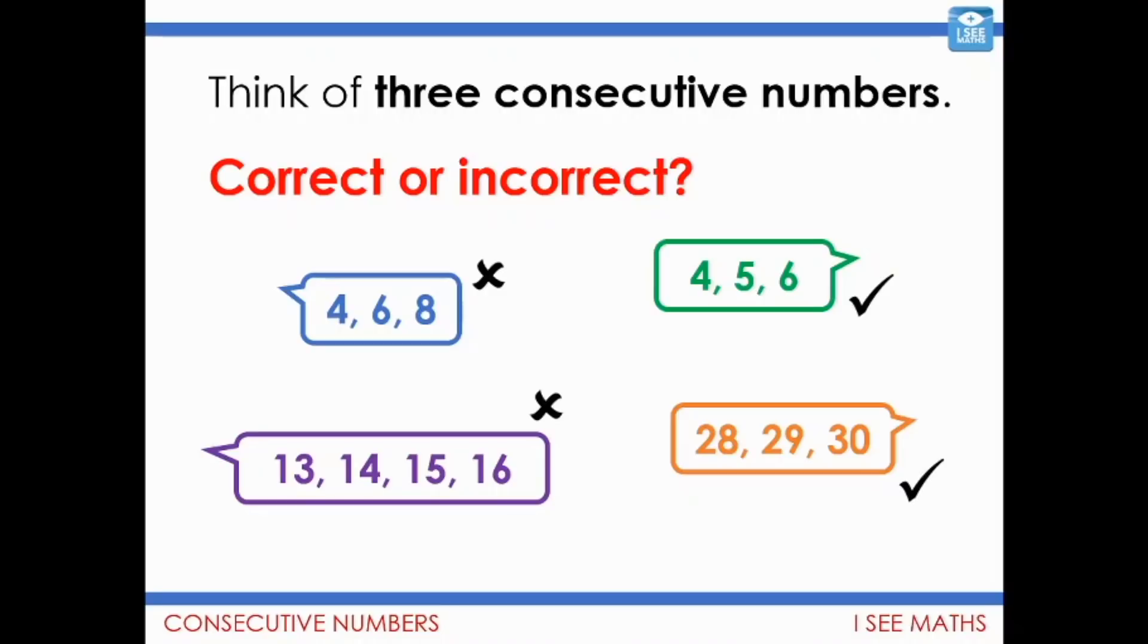Well, 4 plus 6 plus 8, they're not consecutive numbers. Because there, the numbers are going up in steps of 2, not 1. 4 and 5 and 6, they are correct. 13, 14, 15 and 16 are consecutive. But it's not 3 consecutive numbers, it's 4. 28, 29 and 30, well that of course is a correct example. So, on to the next stage in the challenge.